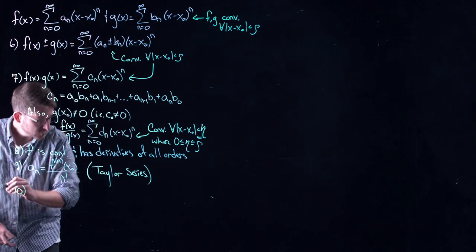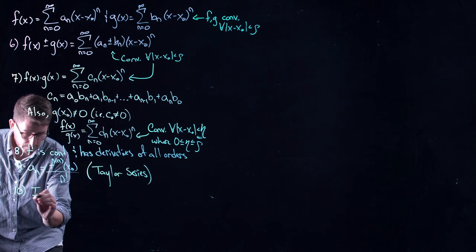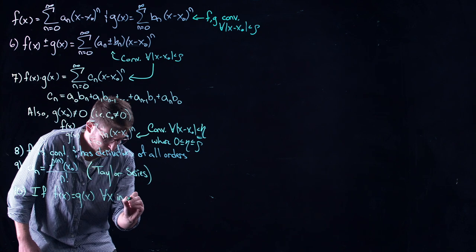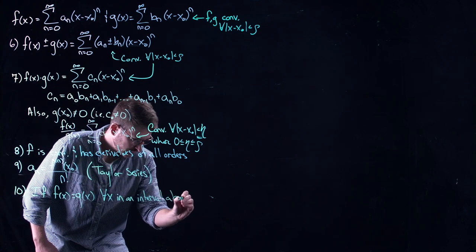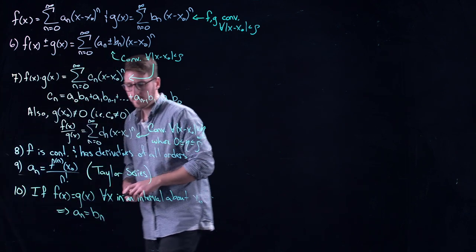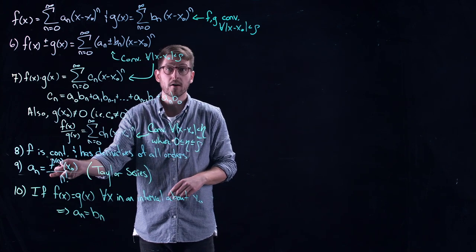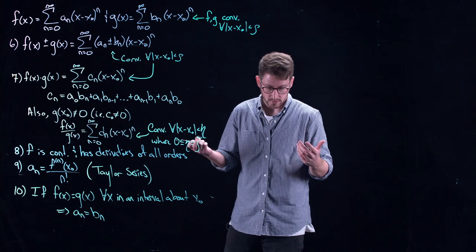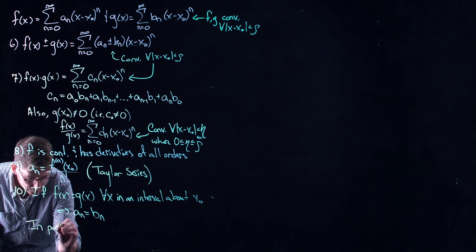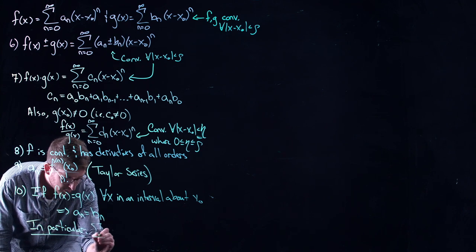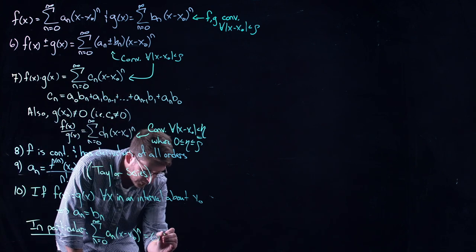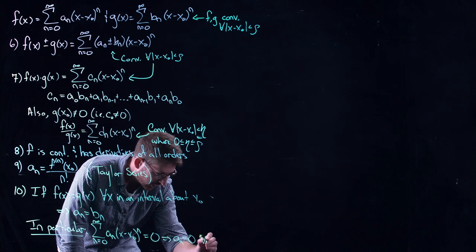If f(x) = g(x) for all x in an interval about x₀, then all the coefficients are equal: a_n = b_n for all n. In particular, if a power series equals zero for all x in an interval about x₀, then every coefficient a_n = 0 for all n ≥ 0. This property will be used a great deal as we proceed through the next lectures on differential equations.